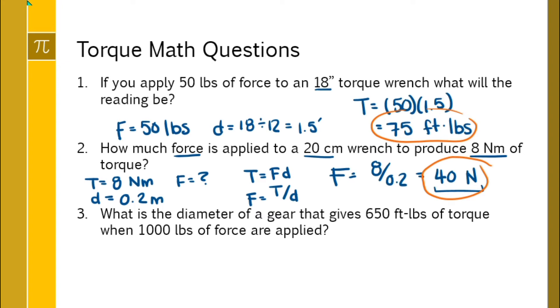And on to number three, what is the diameter of a gear that gives 650 foot pounds of torque when a thousand pounds of force are applied? We're going to start realizing that we're solving for the distance, not the diameter. That's going to be torque divided by force, just rearranging that formula.